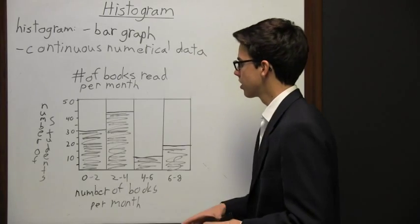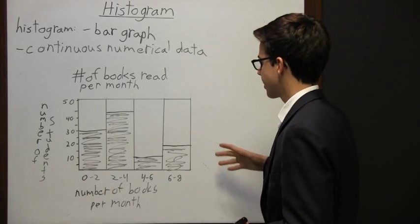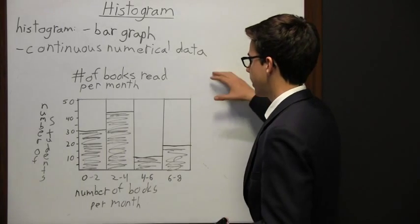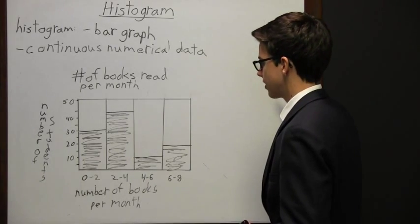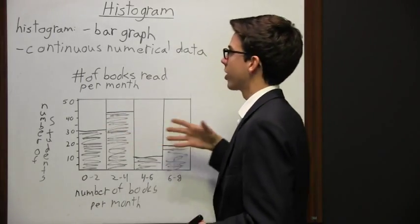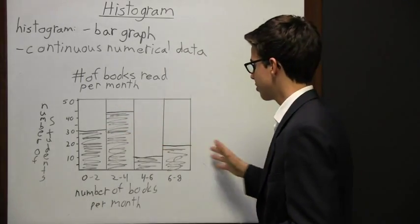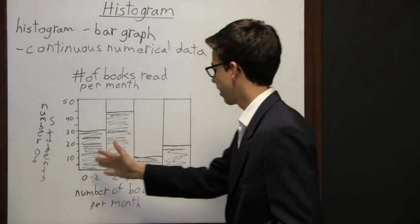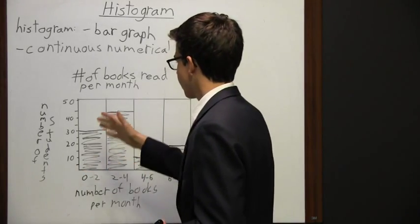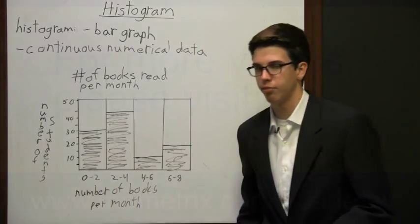This is a way to visually represent data that we could have just written down on paper — for example, 30 students read 0 to 2 books per month. But by putting it in what we call a histogram, it's a way to show this continuous numerical data of each amount of books, and to present it visually so that it's easier to comprehend.